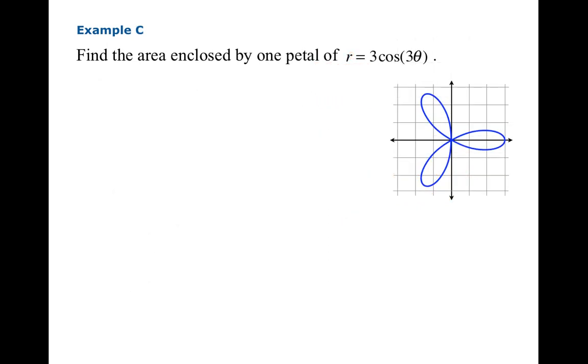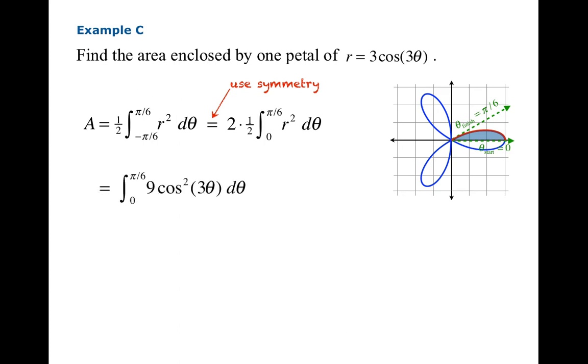Finally, let's do this less trivial example. Find the area enclosed by one petal of R equals 3 cosine 3 theta. Now, you can figure out that going from negative pi over 6 to pi over 6 for your theta will do the trick to get one petal. Now, so we could integrate that way. But I strongly urge you whenever possible to use symmetry to cut down your calculations. So let's just go from 0 to pi over 6 and double the result. In which case we're looking at that integral right there.